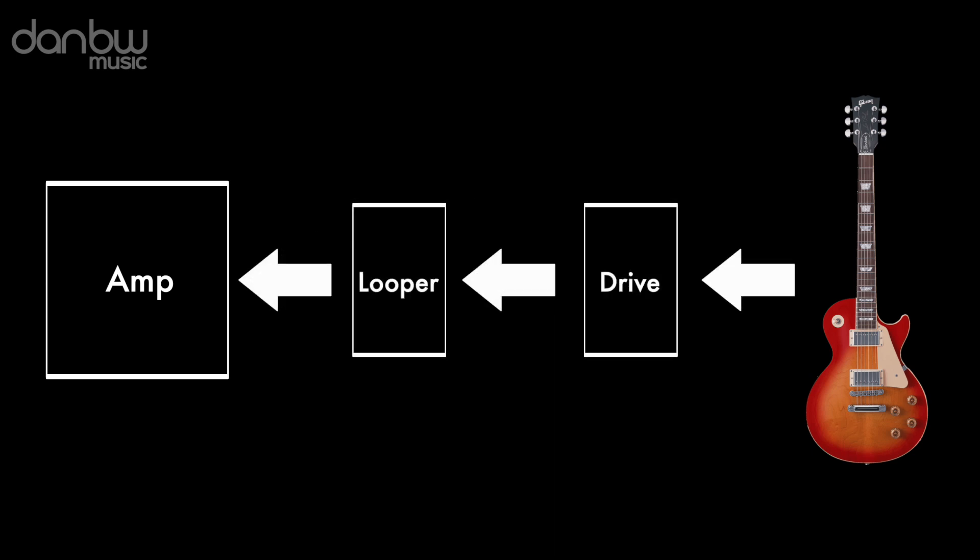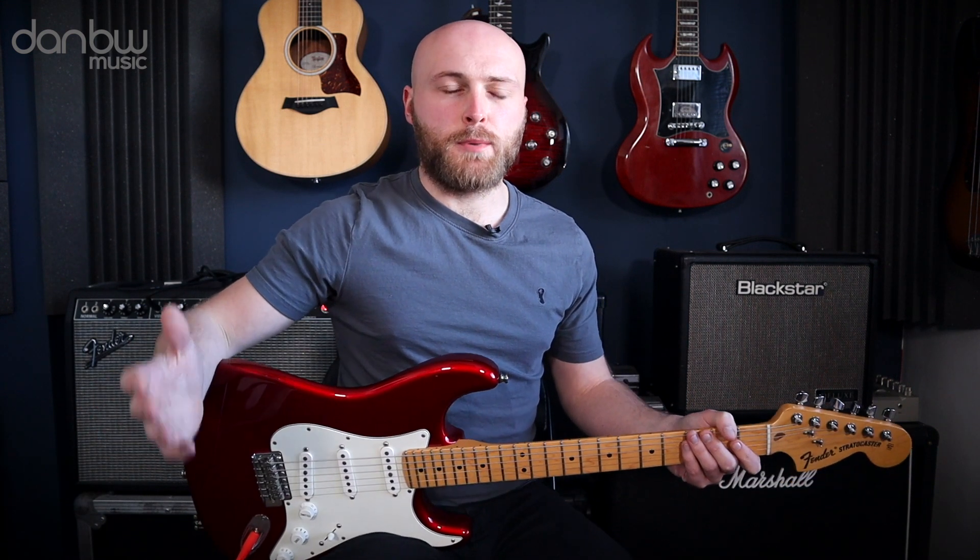Plug your guitar into the looper and then the looper into the amp. Pedals work from right to left, so just check you're plugging the guitar into the input, not the output. If you're using other pedals, put your looper last in the chain so you can have different sounds on your rhythm and lead parts. To record the demo loop — it's G sus9 and D sus9 — press the button as you strum the first chord to start recording, play through the whole progression, then click the button again to stop. Let's take a look.